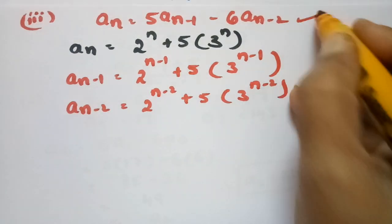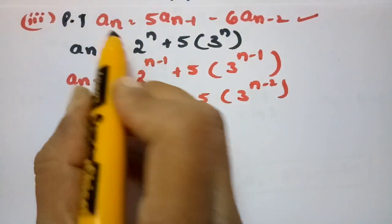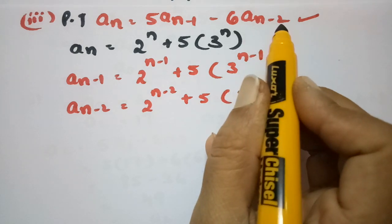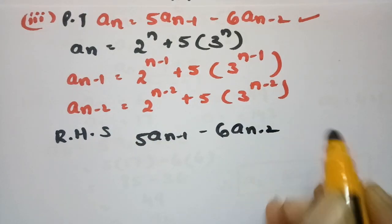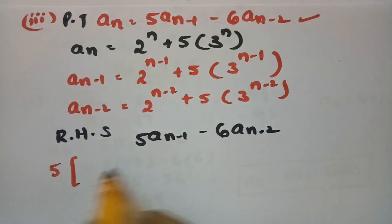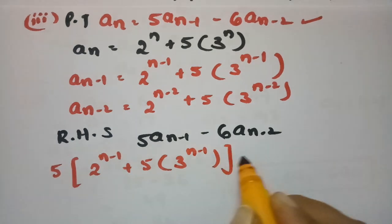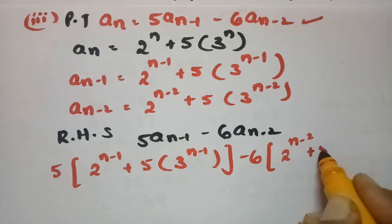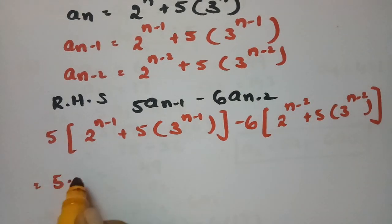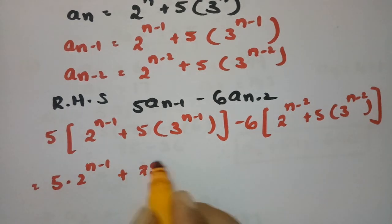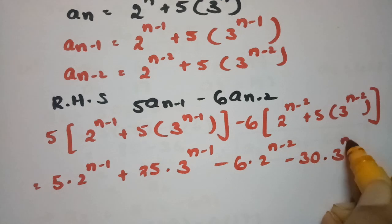Taking the RHS: 5 times a_{n-1} minus 6 times a_{n-2}. This equals 5 times (2^{n-1} plus 5 times 3^{n-1}) minus 6 times (2^{n-2} plus 5 times 3^{n-2}). Multiplying out gives 5 times 2^{n-1} plus 25 times 3^{n-1} minus 6 times 2^{n-2} minus 30 times 3^{n-2}.